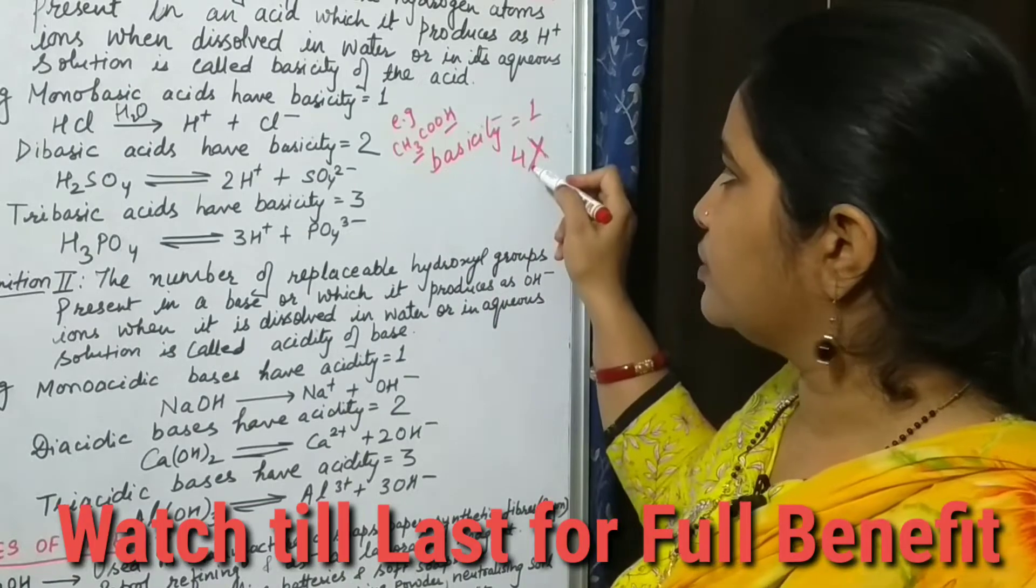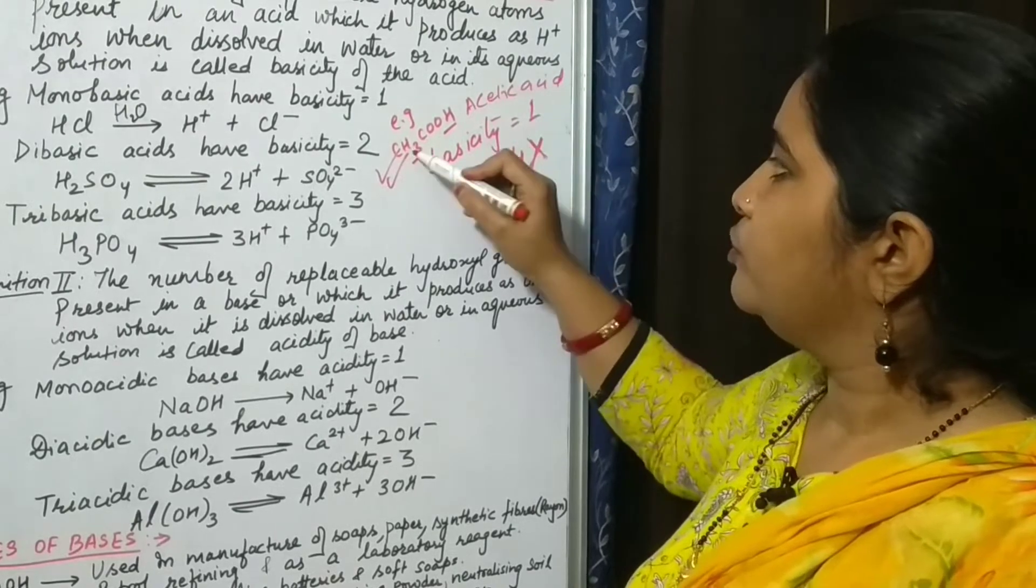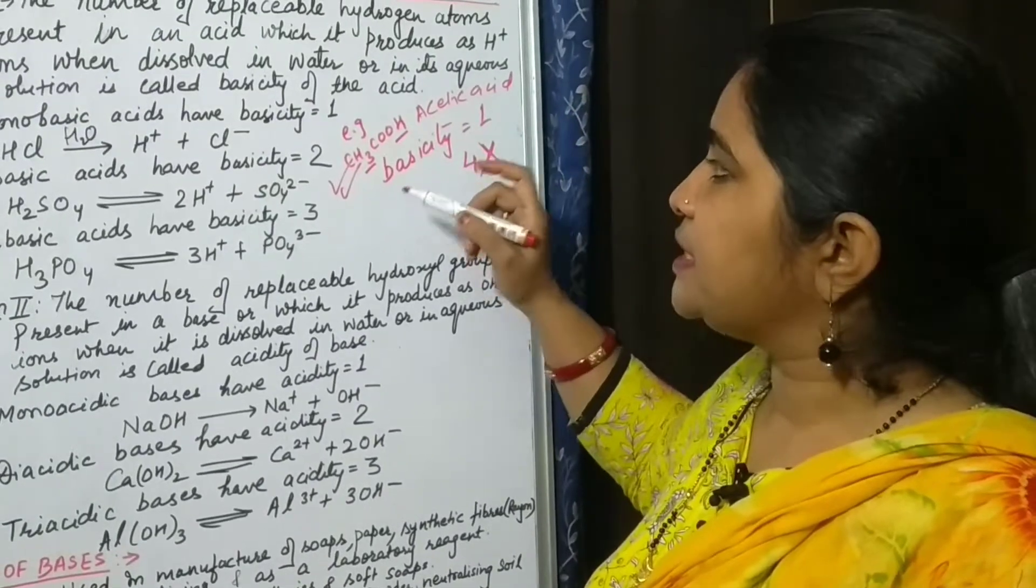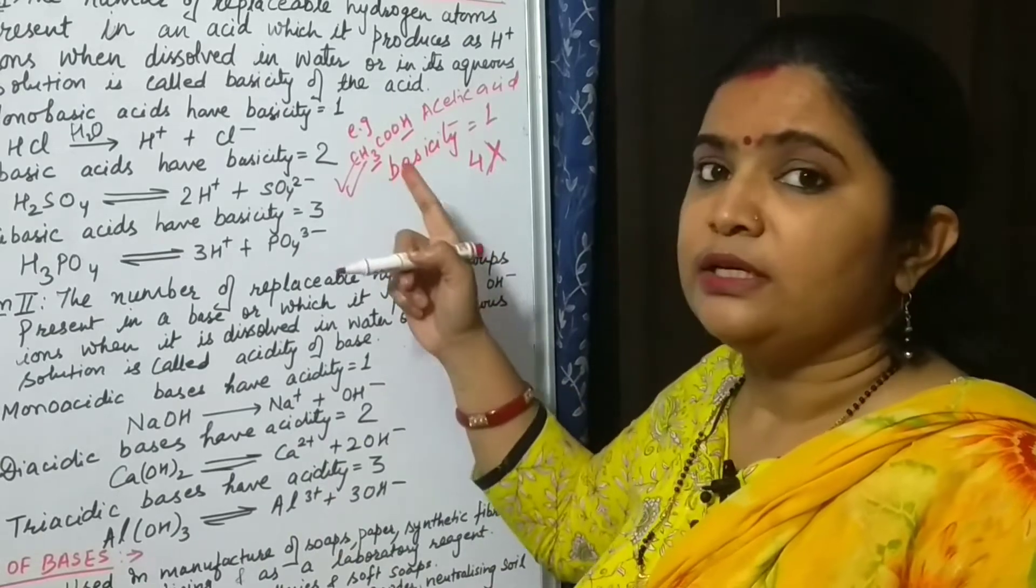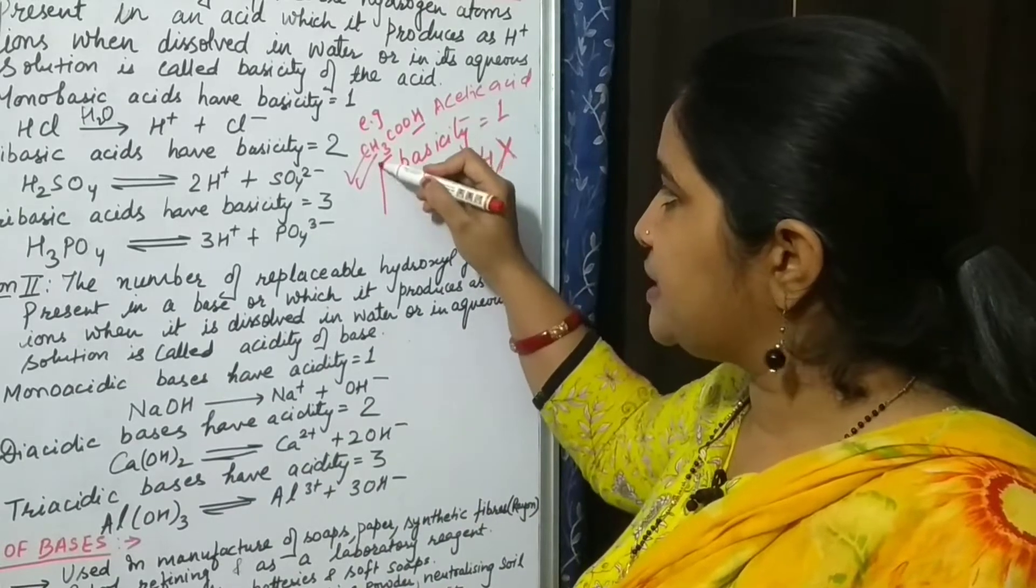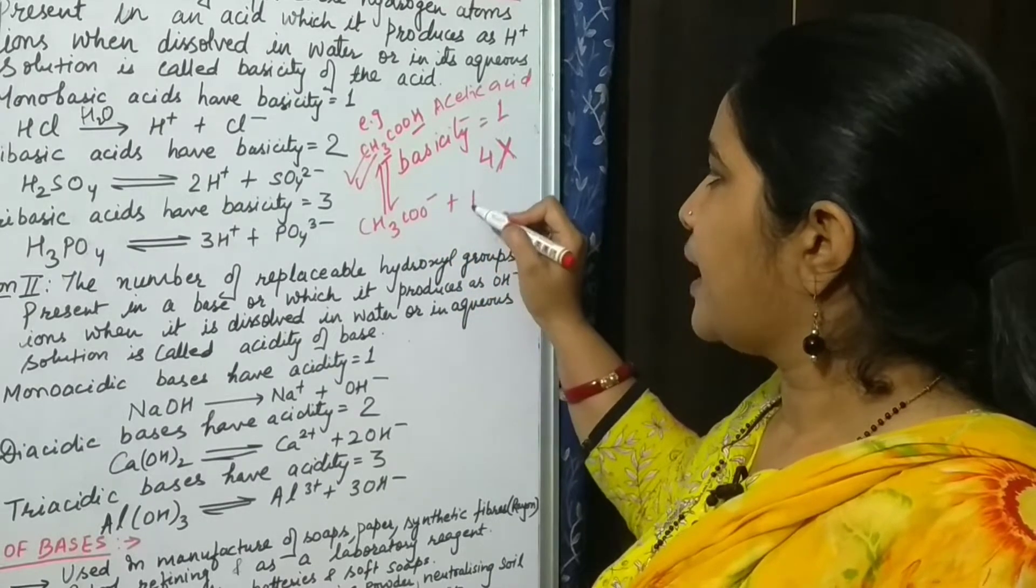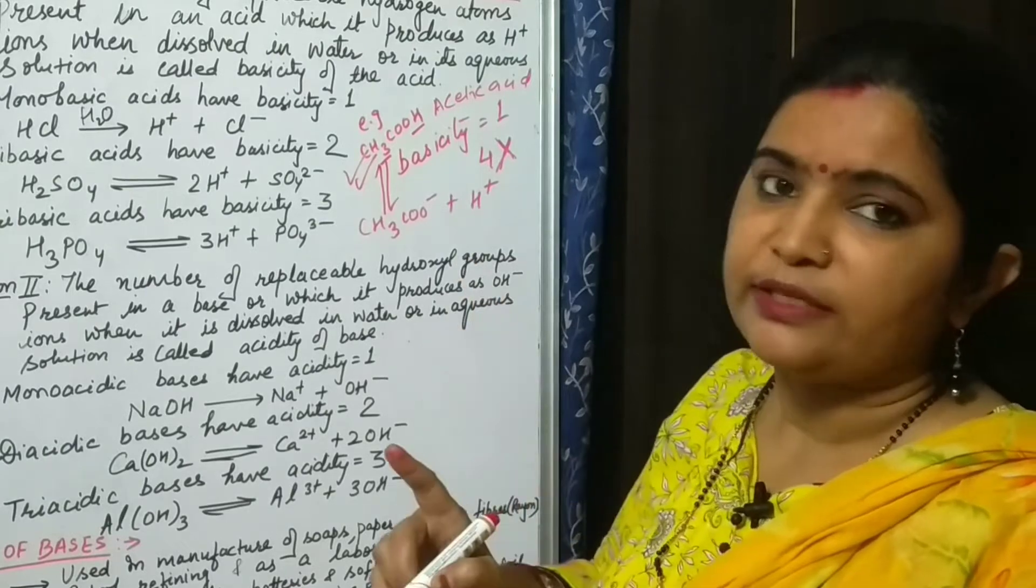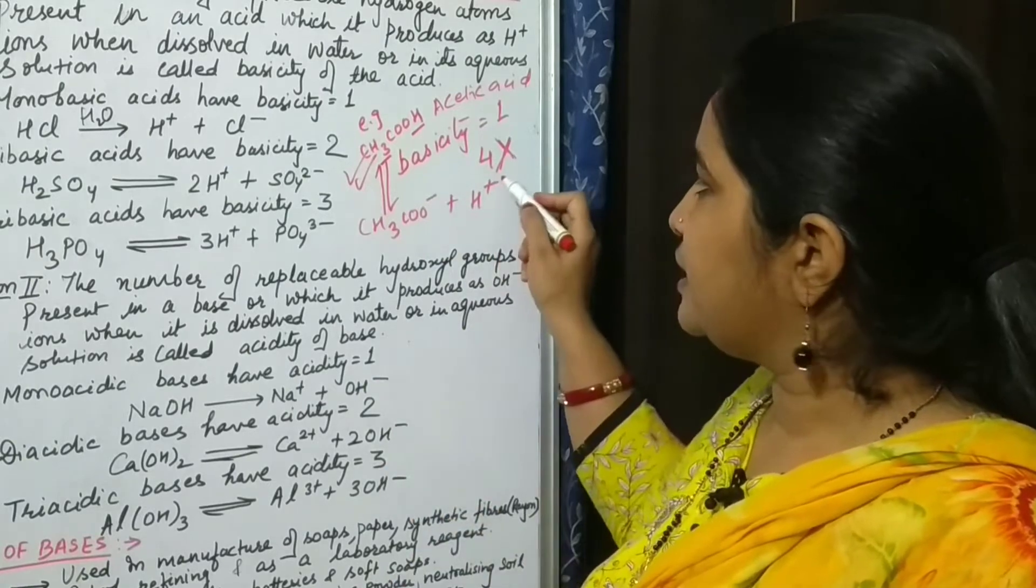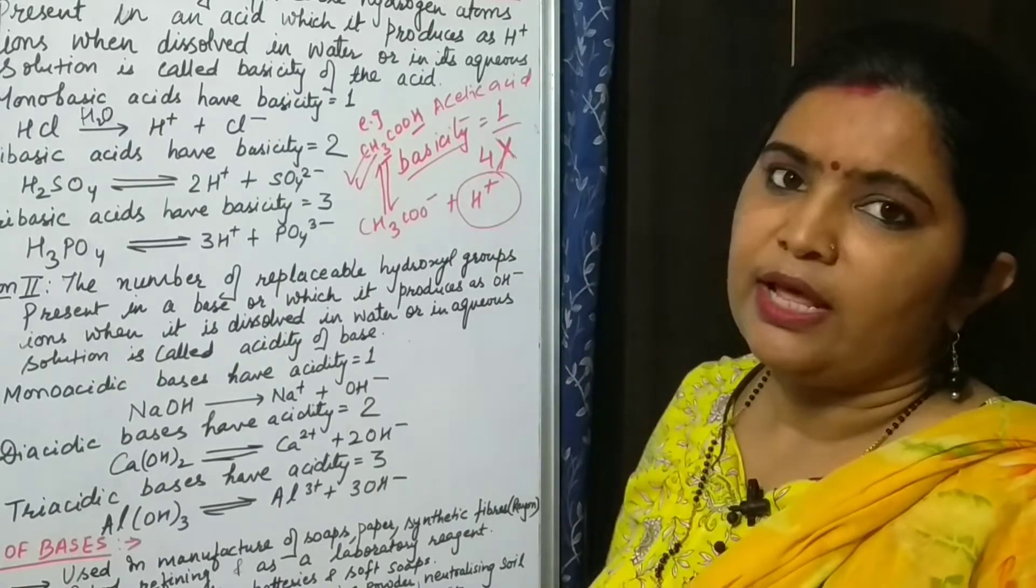No, this concept is wrong because here we could see that in case of acetic acid it has four hydrogen atoms but its basicity is one. It means it is the capacity of that acid to how much H+ ion it can liberate in aqueous medium. We have already seen that it has capacity to liberate only one H+ ion because it is a weak base, so it does not ionize completely. That's why it liberates only one hydrogen ion. That's why its basicity will be one.